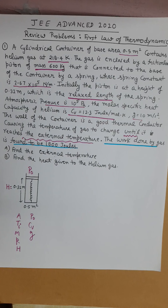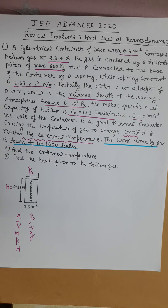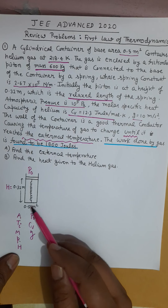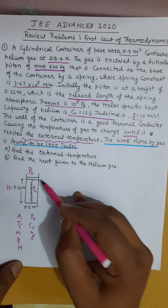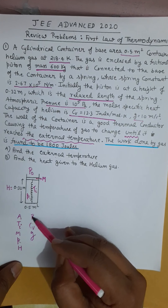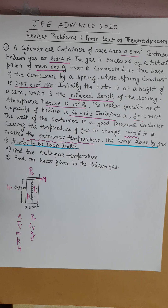As a revision problem, this is my first question. I have underlined the key numeric values and written them in alphabetical form. Capital A stands for the area of the container. Ti is the initial temperature of the gas inside. M is the mass of the piston. K is the spring constant. H is the initial height. P0 is the atmospheric pressure. Cv is the molar heat capacity of the gas. All values are given in your problem.